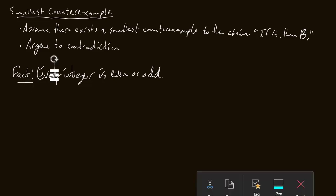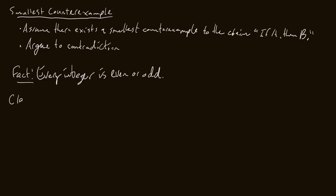My first claim is going to be about the natural numbers. Claim: every natural number is even or odd. And now we're going to do a proof by contradiction using our smallest counterexample.